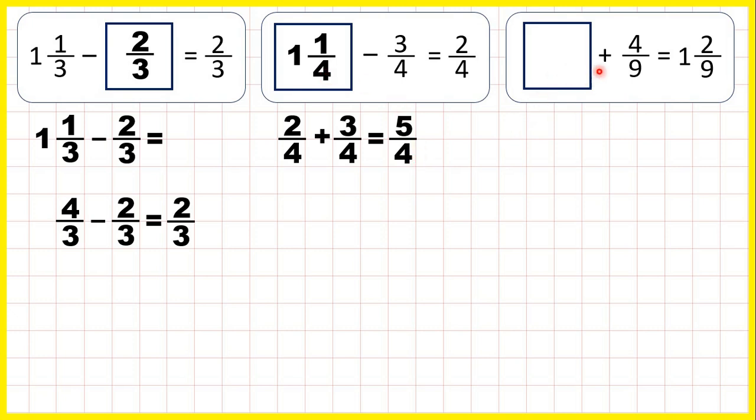Now, something plus four ninths is one and two ninths. So whenever you have a missing number addition problem, you can use subtraction to find your missing number.